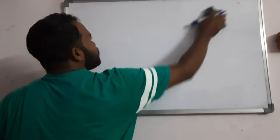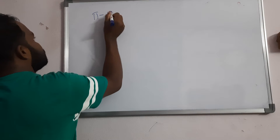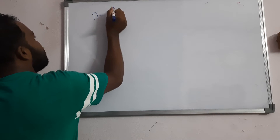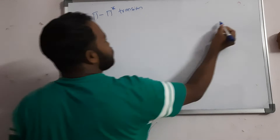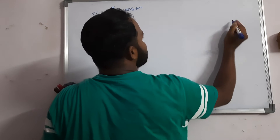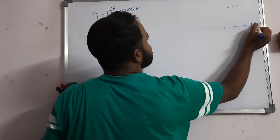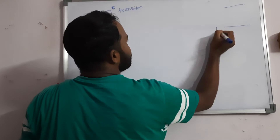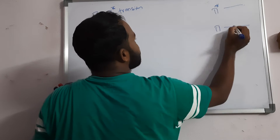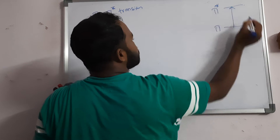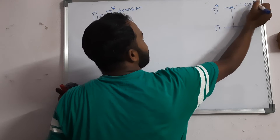Generally, conjugated molecules contain pi to pi* transitions. Here, if the lower level is pi and the upper level is pi*, then a pi to pi* transition occurs. If the lower state is n, the upper state is n+1.